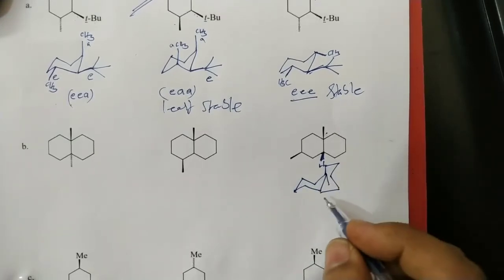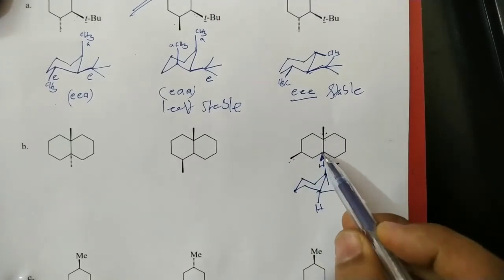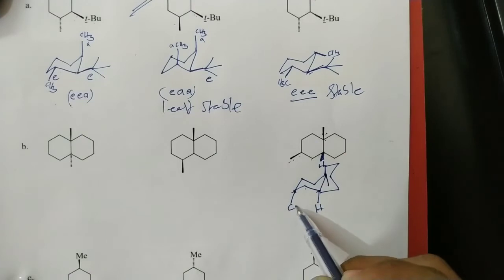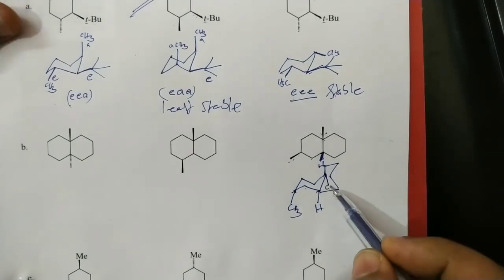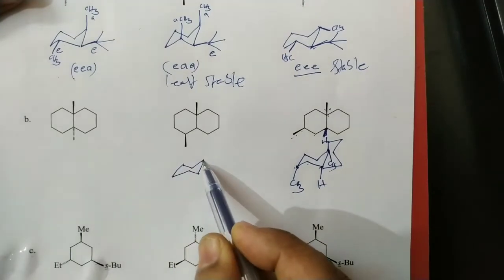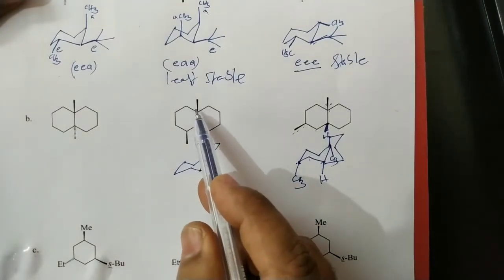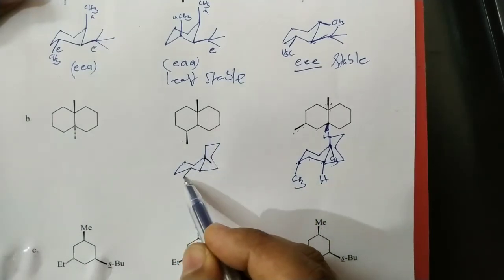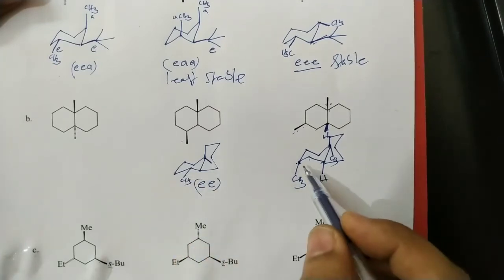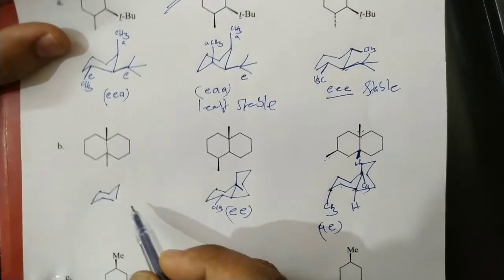Taking the hydrogen above the plane: the methyl is downward, hydrogen also downward. For the cis position, positions 1,2,3,4 — methyl downward, so the other methyl must also be downward because they are in cis position. This methyl is downward, this methyl also downward. In the resulting conformation: this methyl is equatorial, this methyl is equatorial, this methyl is axial, and this methyl is equatorial.